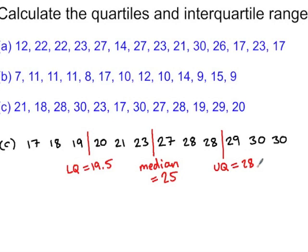So you can see when the number of data points is a multiple of 4, the lower quartile, median, and upper quartile lie between values and they divide the data into equal sections. In this case we have 12 data points, so we have 4 groups of 3 data. Our interquartile range is 28.5 take 19.5, which is 9.